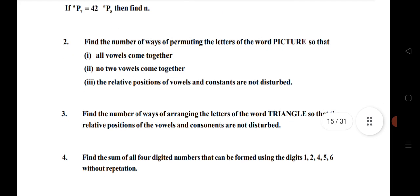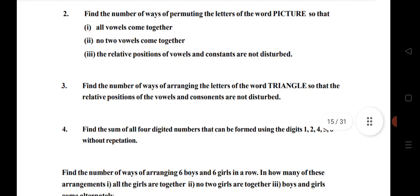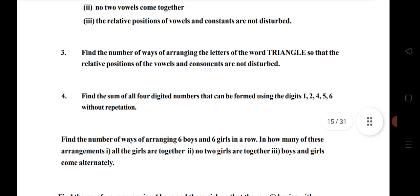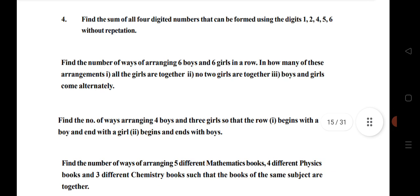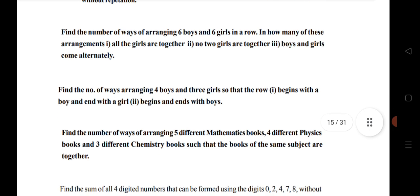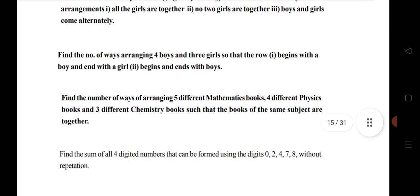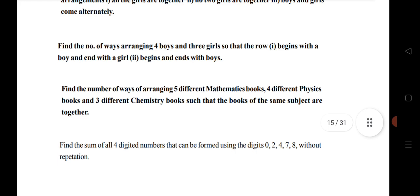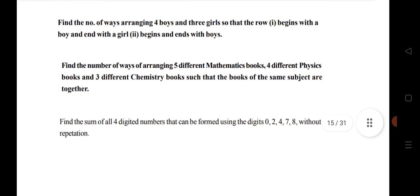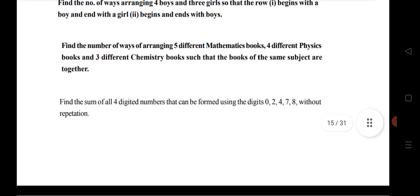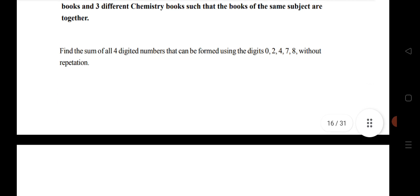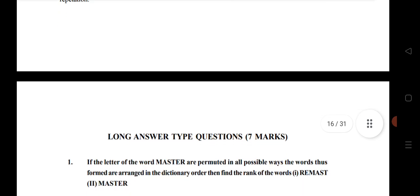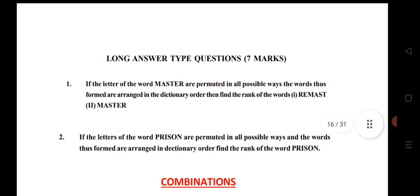SAQ questions from permutation: find the number of ways of permuting the letters of a word; 3rd one is also very important — triangle, four-digit number, find the number of ways; six boys and six girls in a row, find the number of ways; four boys and three girls; number of ways of arranging five different mathematics books and four different physics and chemistry books. The last one is a very important long question from permutation.